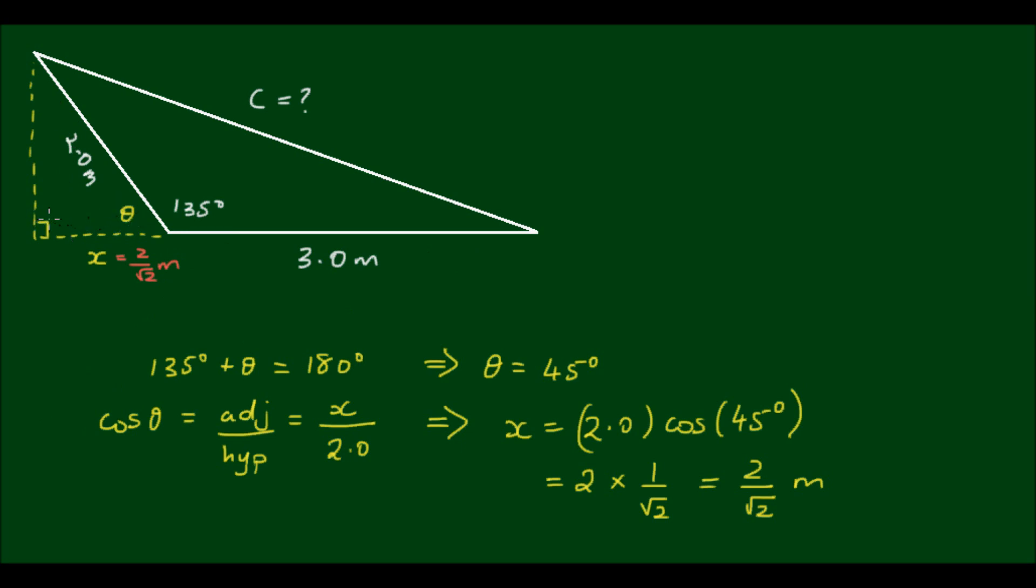Since this angle is 90 and this angle is 45, then to complete the triangle this angle also has to equal 45 degrees, because there are 180 degrees inside a triangle. We have two equal angles, therefore we must have two equal sides—this is an isosceles triangle. So this vertical side is also equal to 2 divided by root 2 meters.